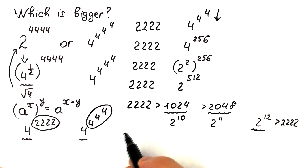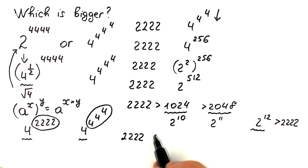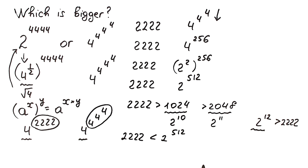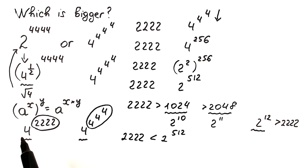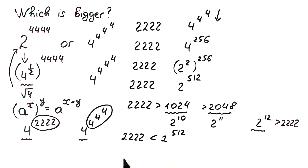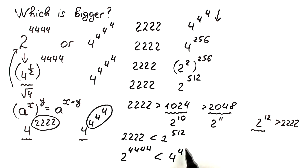So now let's write our final answer. Since the exponent on the right-hand side is greater, the whole expression on the right is greater. Therefore, 2^4444 is less than 4^(4^(4^4)). That is our answer.